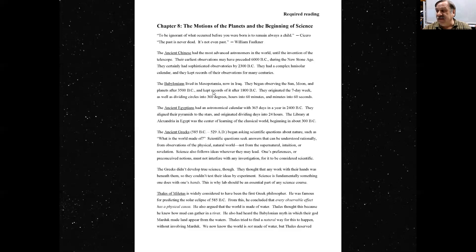The Babylonians lived in Mesopotamia, which is now in Iraq. They began observing the sun, moon, and planets after 3500 BC and kept records of it after 1800 BC. Many of their clay tablets that they recorded, their observations still exist and can be read today.